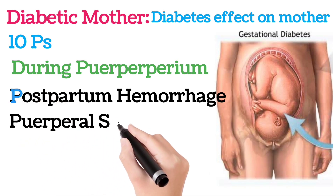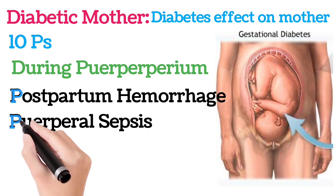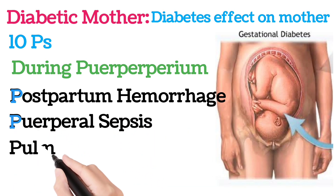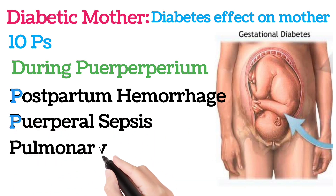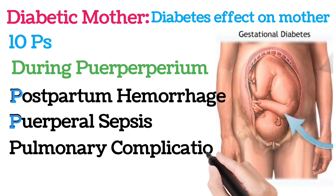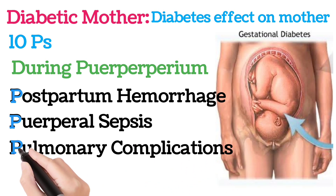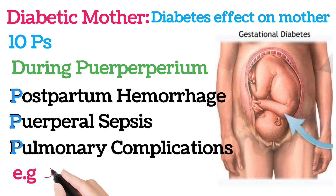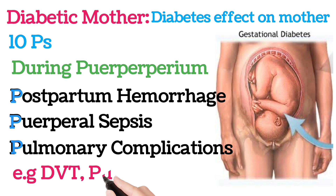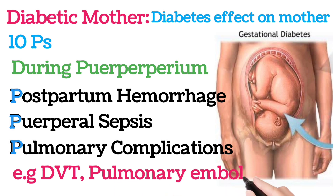The remaining puerperal Ps are puerperal sepsis and pulmonary complications, for example DVT and pulmonary embolism.